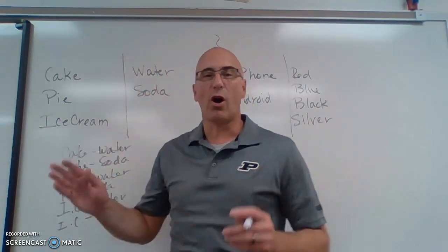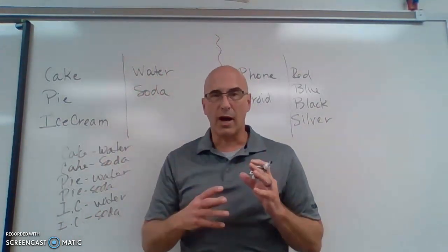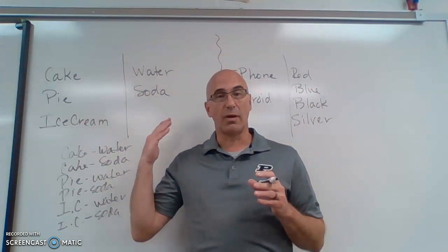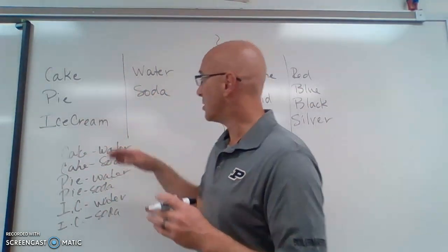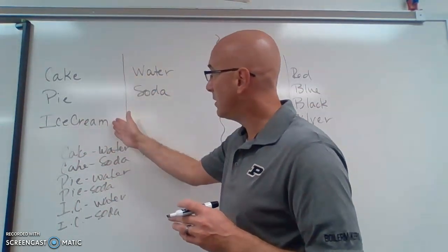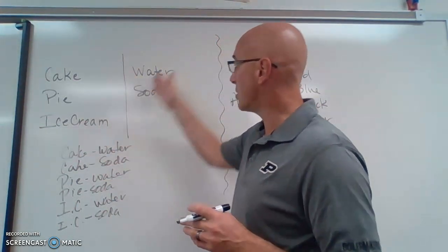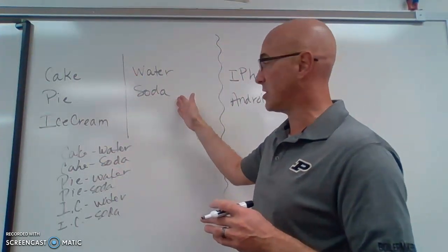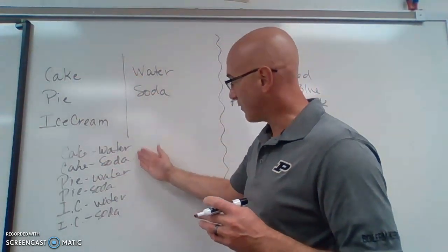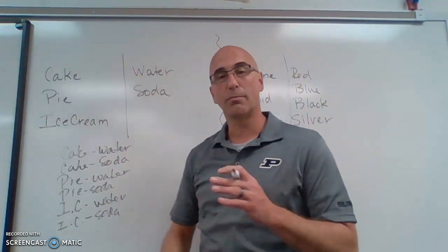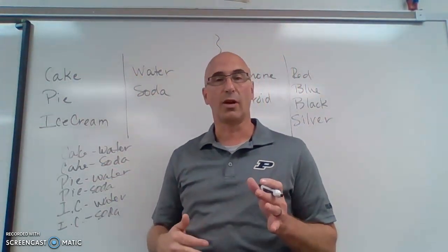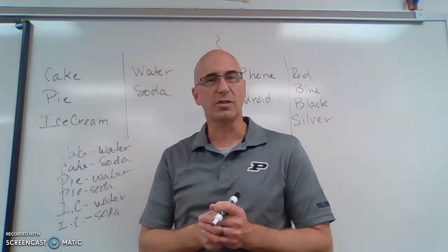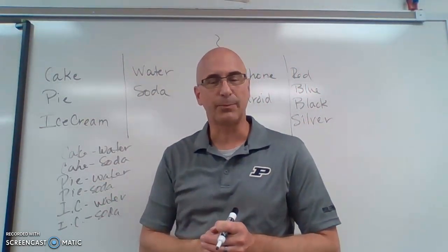So those are all the possible combinations of desserts and beverages. We see that if we have three desserts and two beverages, we have six possible outcomes. I wonder how those numbers are related.